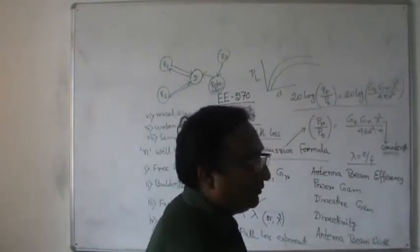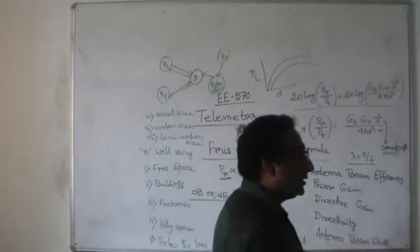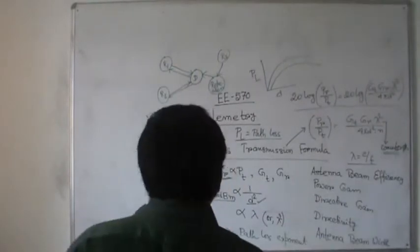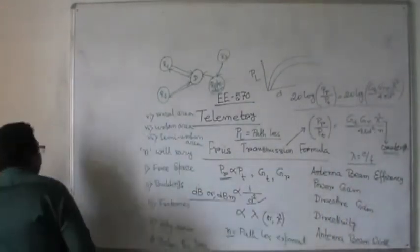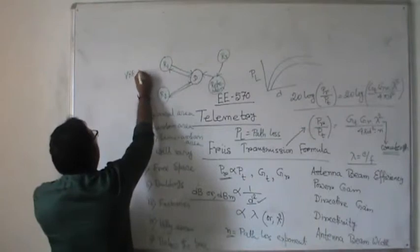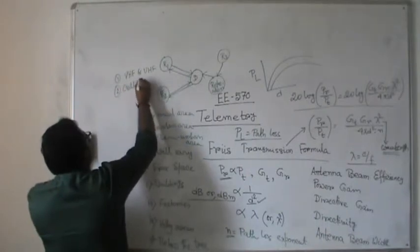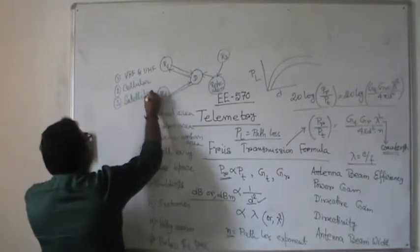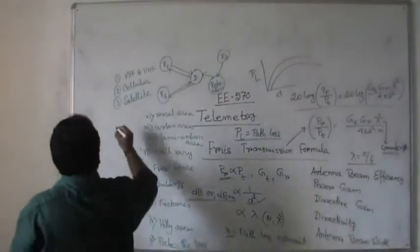We can use satellite telemetry for those distant locations placed at very remote places. So there will be several types of telemetry: number one — VHF and UHF; number two — cellular; number three — satellite; and spread spectrum telemetry is also included. All these are very important types of telemetry.